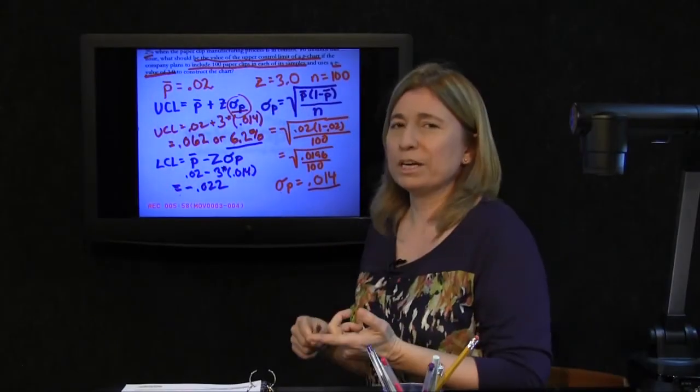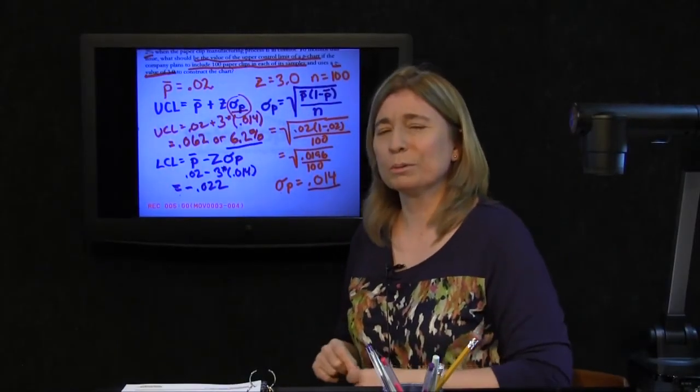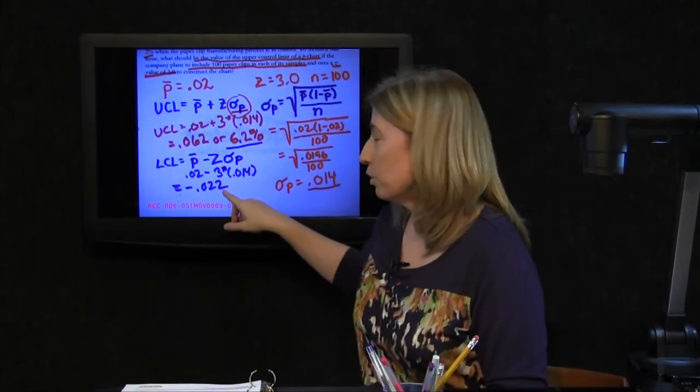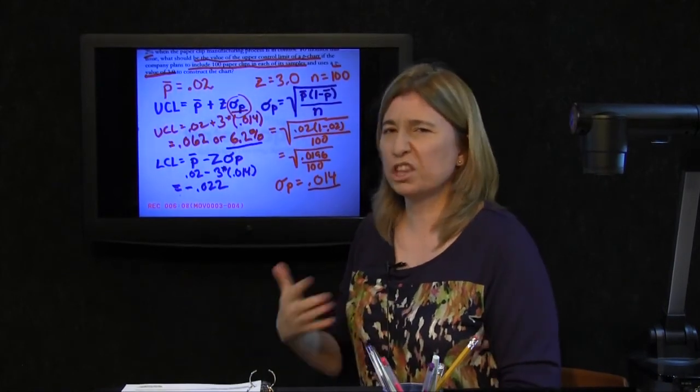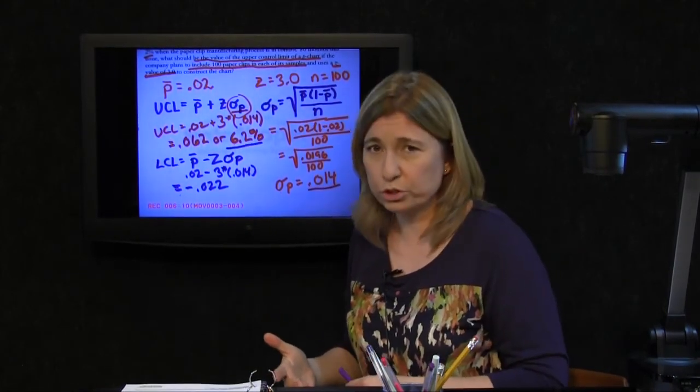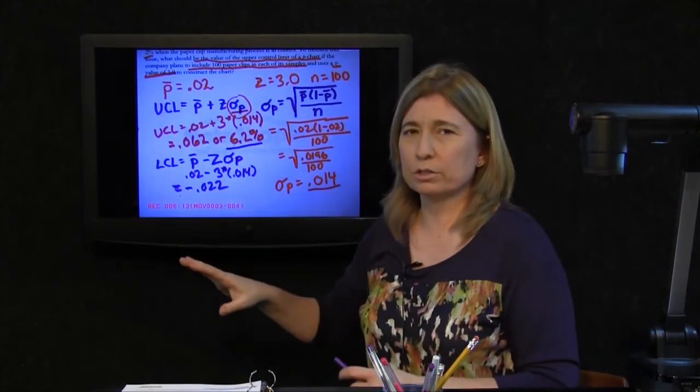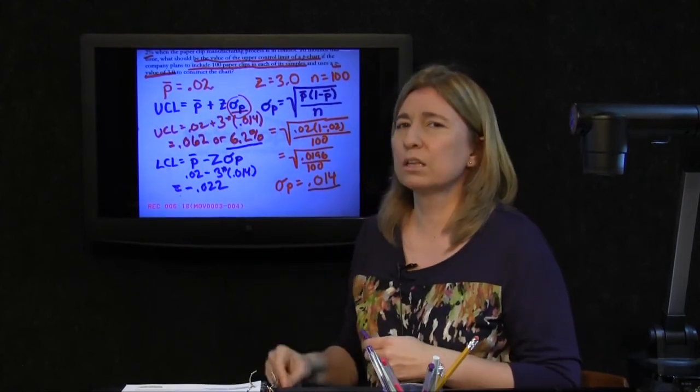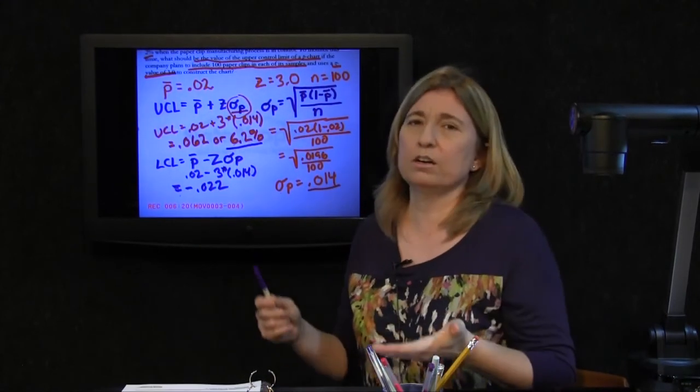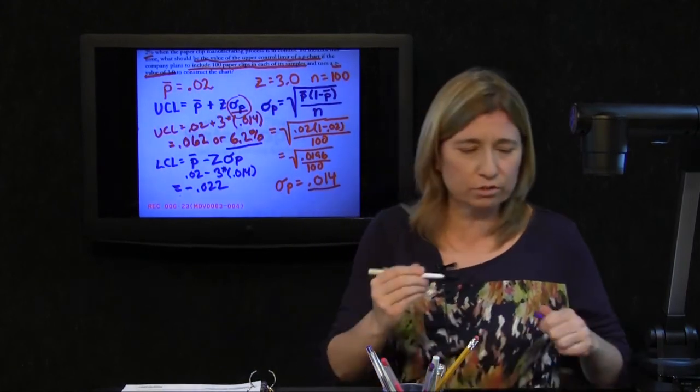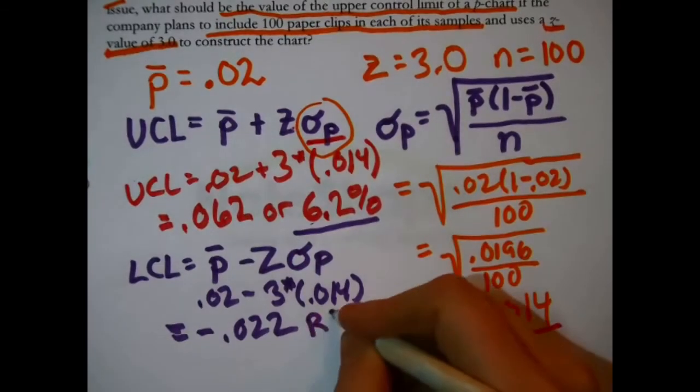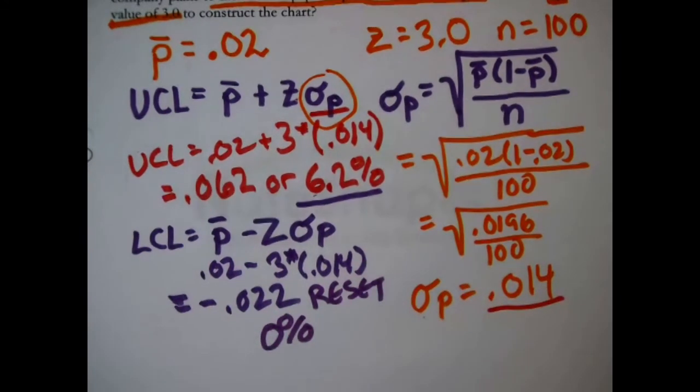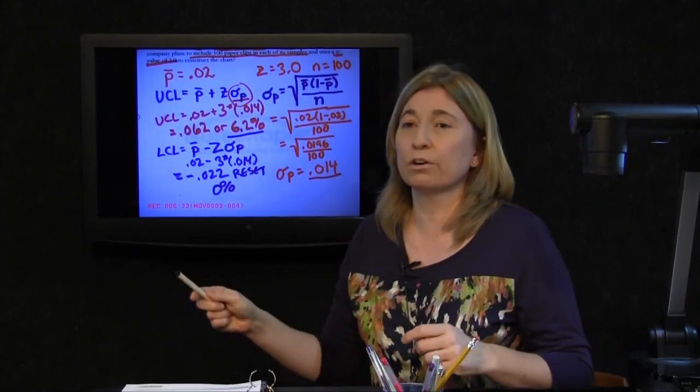If somebody asks you, what should the lower control limit be, don't report that. That is what should result from the formula, but there's no such thing as a negative proportion. With p-charts in general, it's not just this pay-per-click company, when you're calculating the lower control limit, if that number comes back as negative, just reset it to 0. So the lower control limit of this particular chart would be at 0.